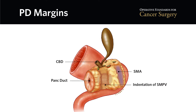These margins include the common bile duct margin, the pancreatic parenchymal margin, and the retroperitoneal or superior mesenteric artery margin. While the common bile duct margin and the pancreatic parenchymal margins can be re-resected if intraoperative histopathologic analysis shows cancer cells at the initial site of transection, the superior mesenteric artery margin cannot be re-resected without resection and reconstruction of the artery.